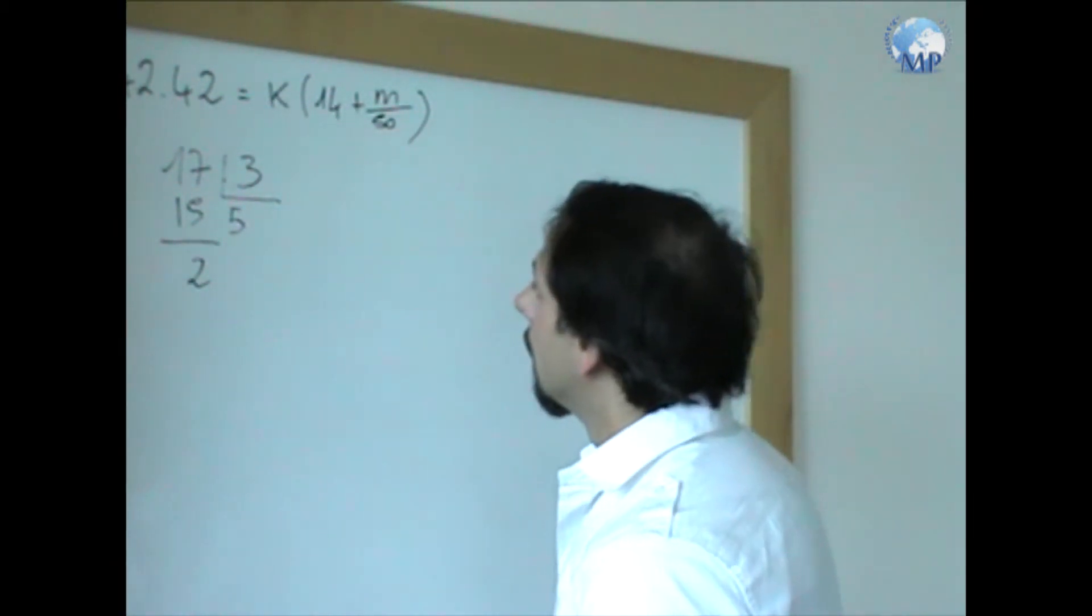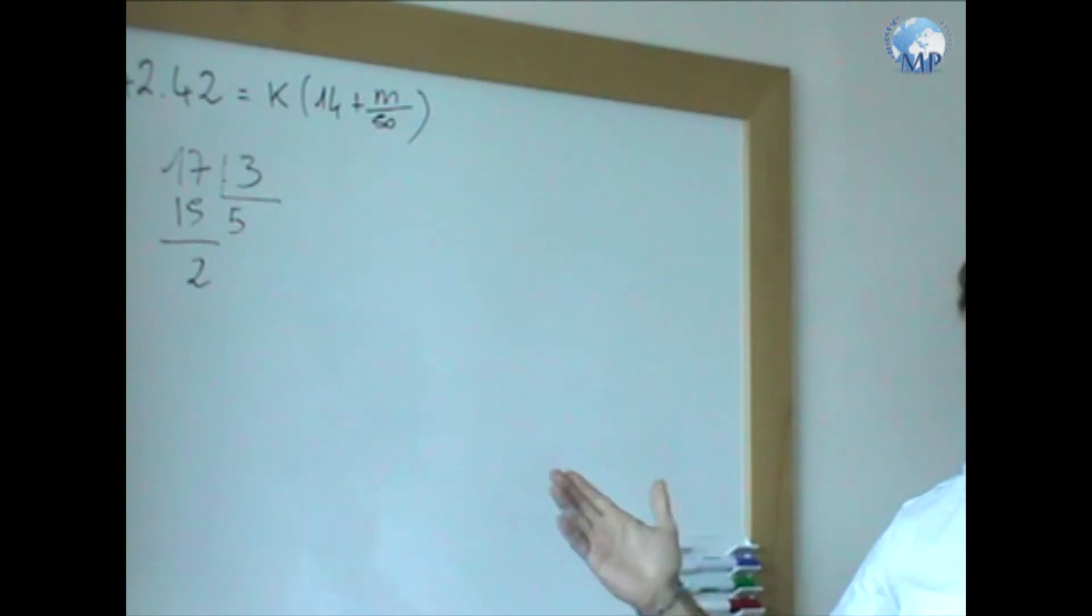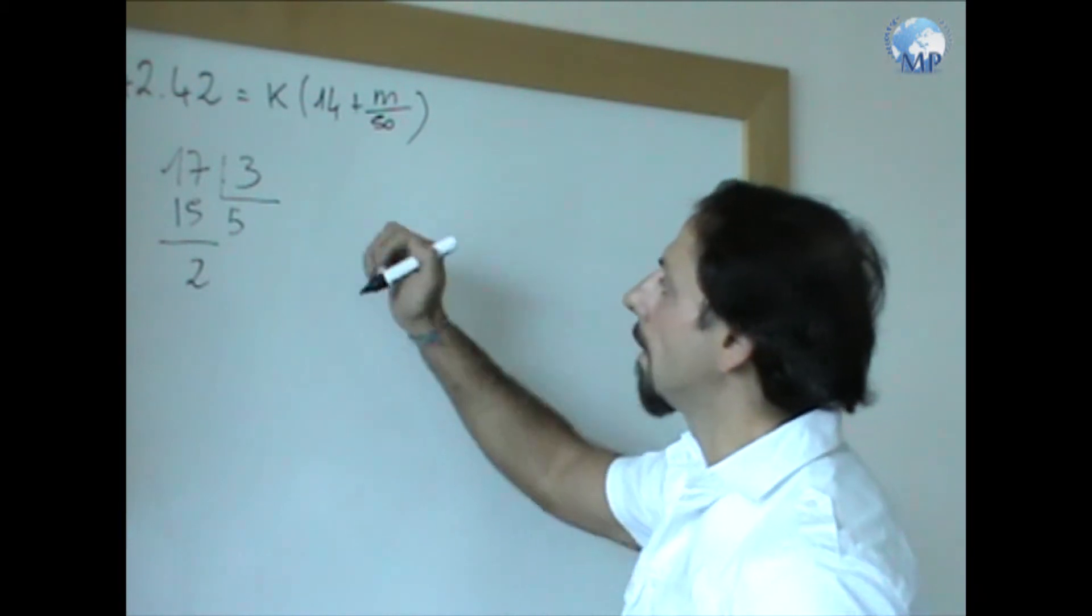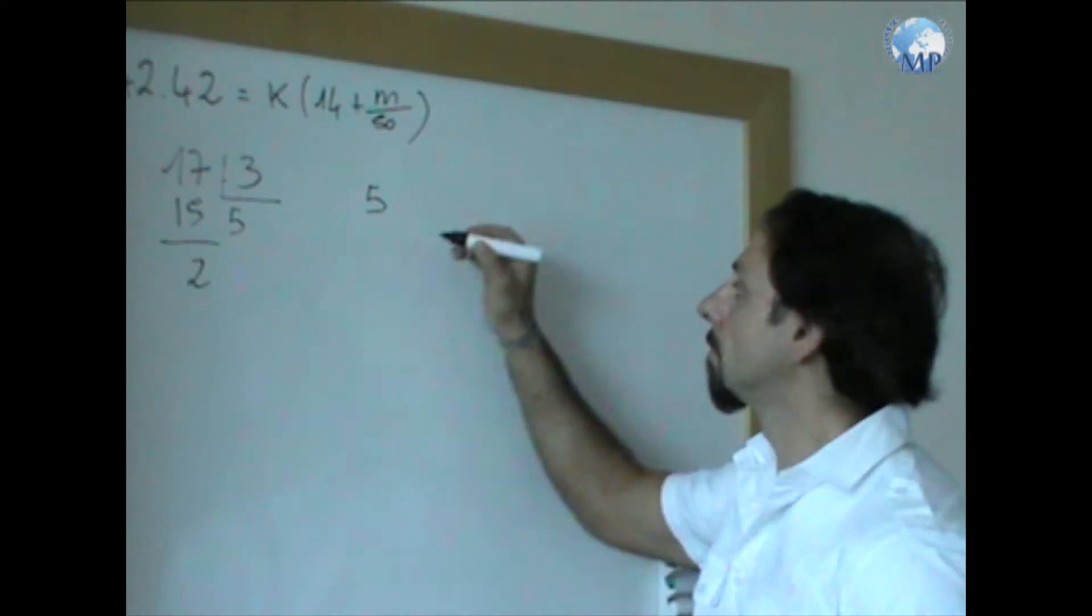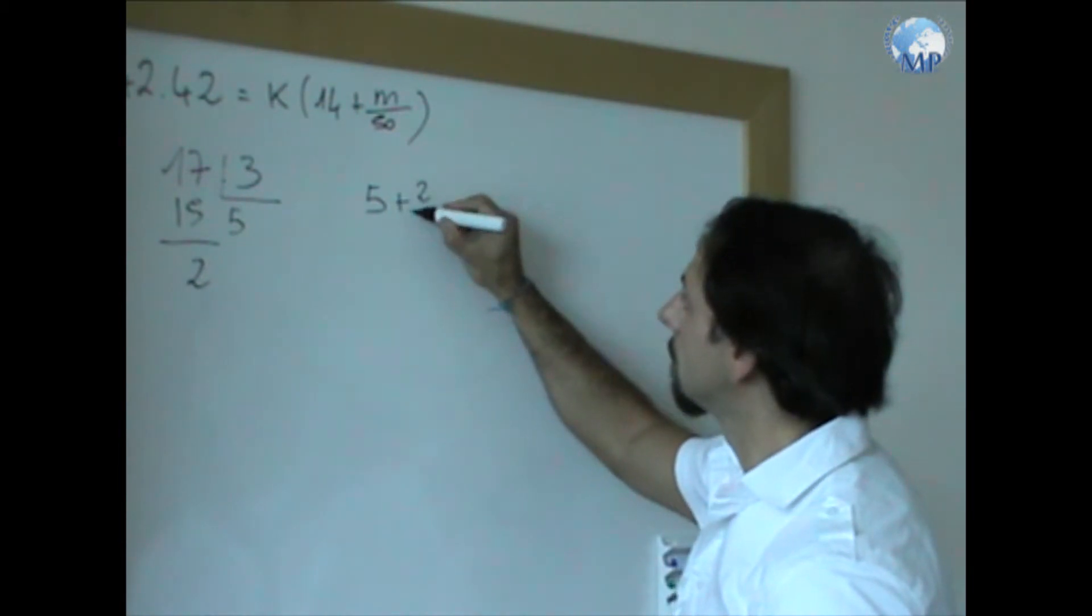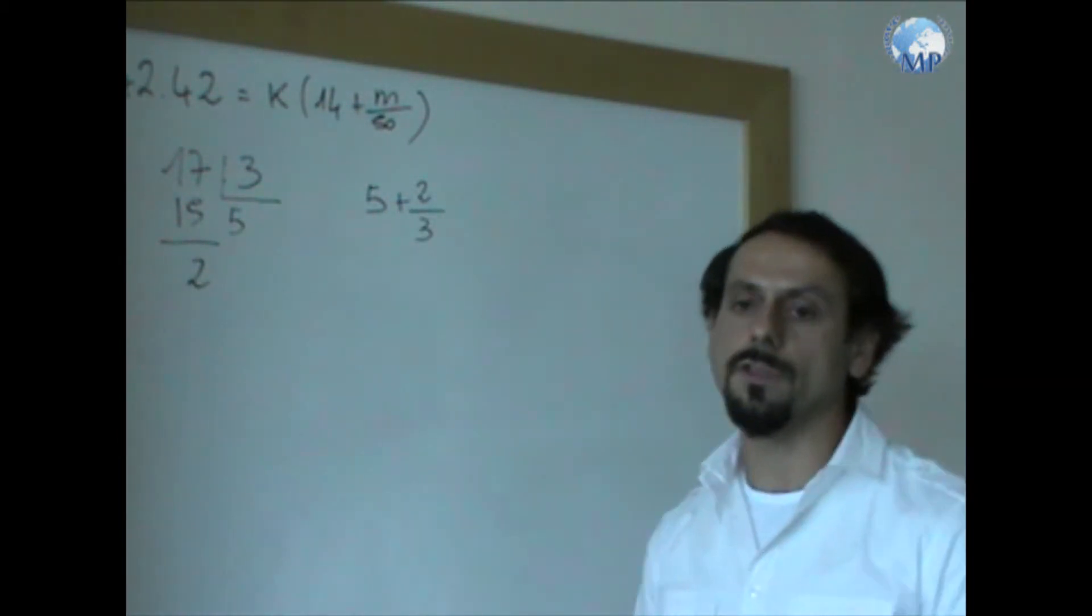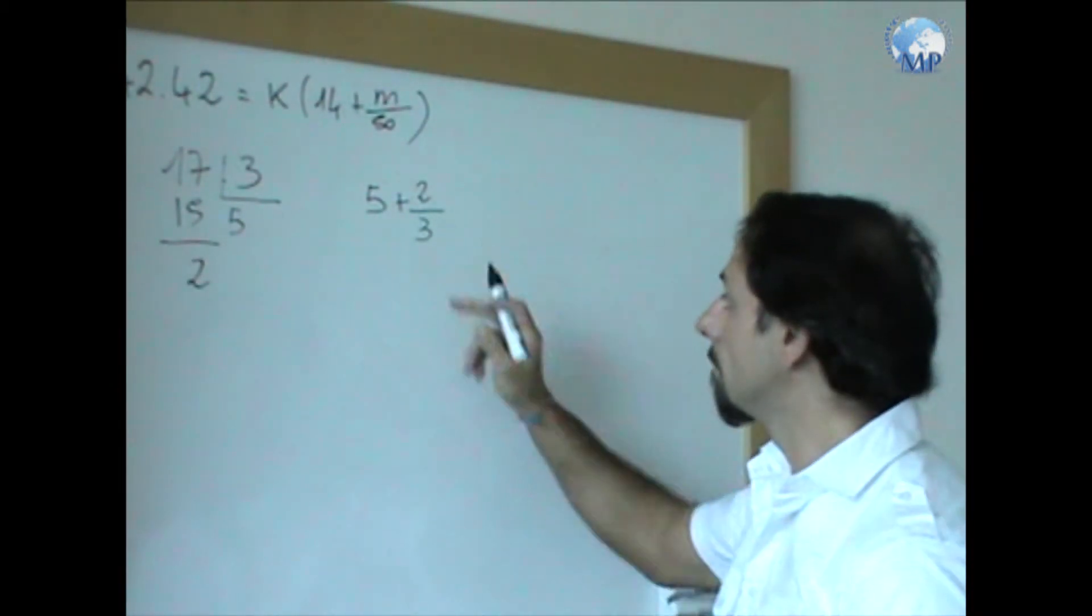I can express this as a mixed number. So a whole number, 5, my quotient, and 2, my remainder, divided by 3, the original number I divided by.